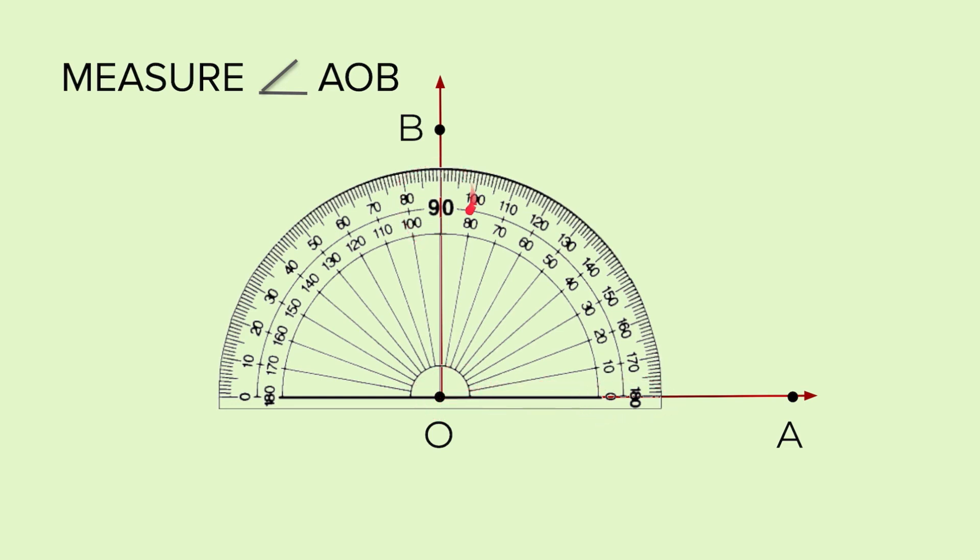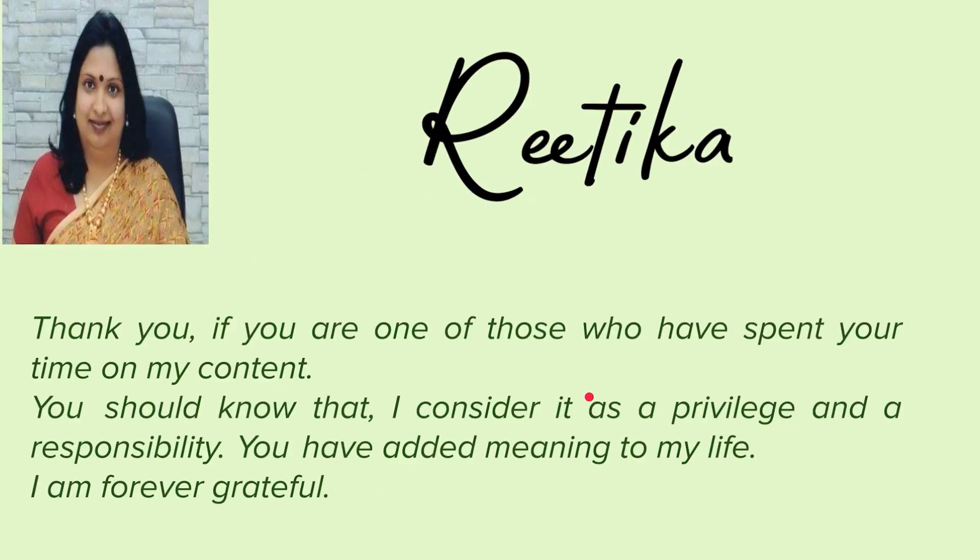Do make sure that line is aligning with the base ray right from the vertex till the reading point. Here we can see the ray is crossing the protractor at 90 degrees. So this angle is 90 degrees. It is a right angle.